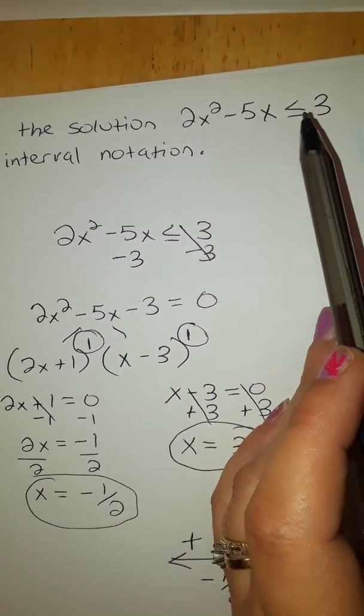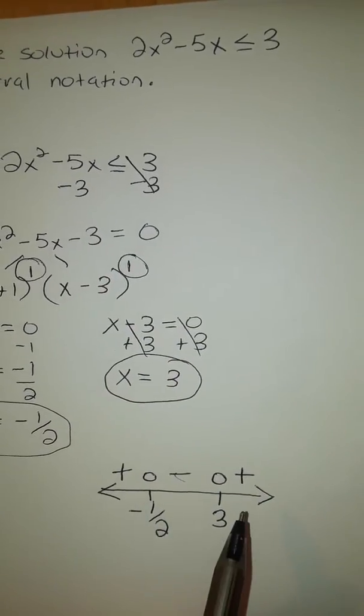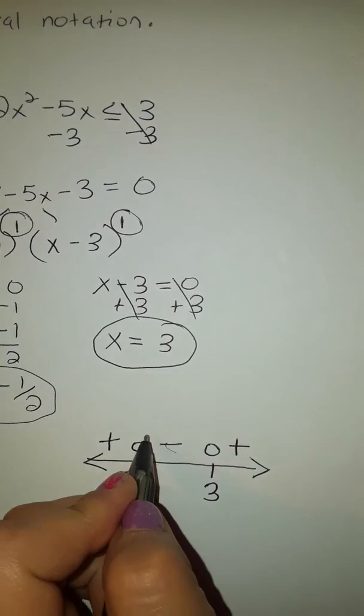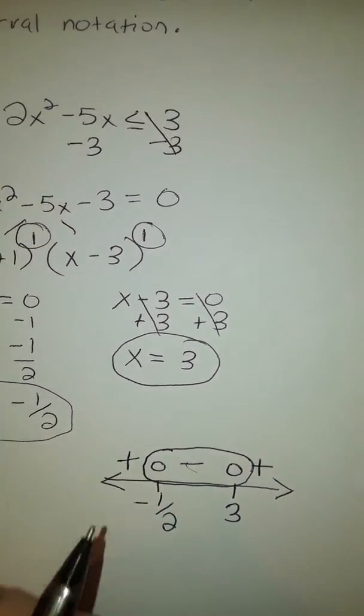And it's asking for whenever 2x squared minus 5x is less than or equal to 3. Well, we go back and look at the line and we notice that negative one half and 3 are included.